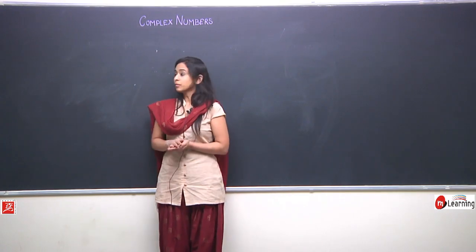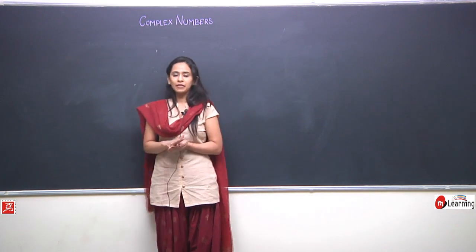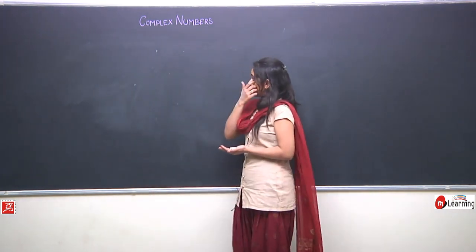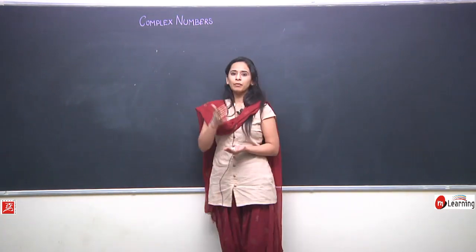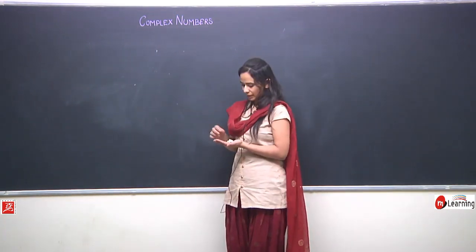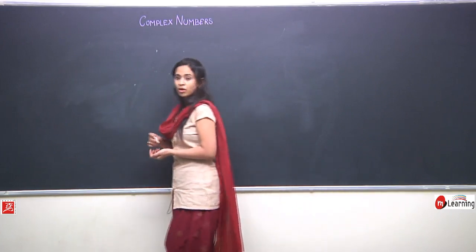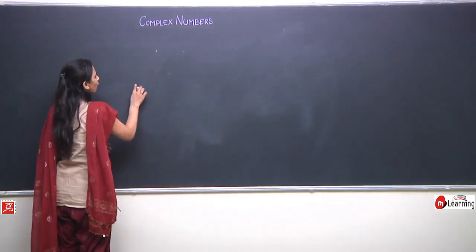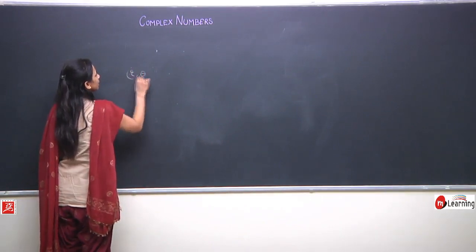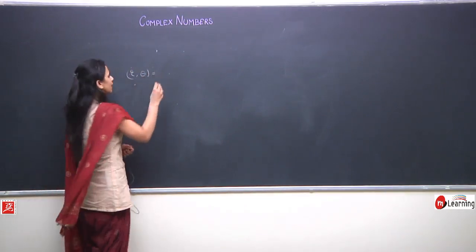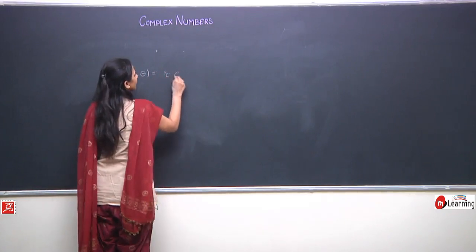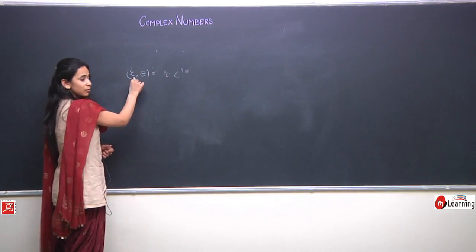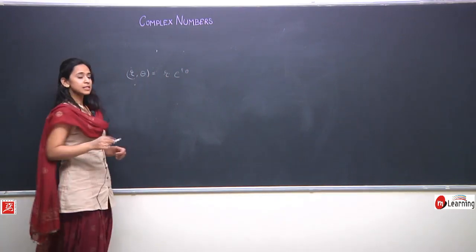Hello. Let us continue our lecture from where we left yesterday. Before that, let us revise what we studied in the previous lecture. We saw how we can represent a complex number of the form r, theta exponentially as r into e to the power i theta, where r is the modulus of the complex number and theta is its argument.